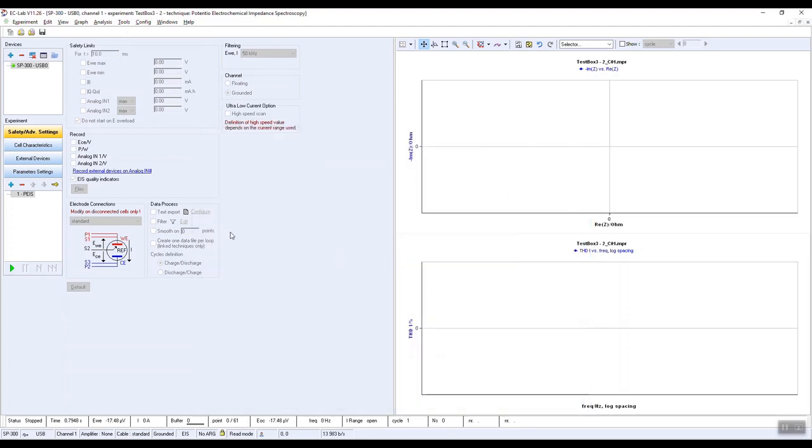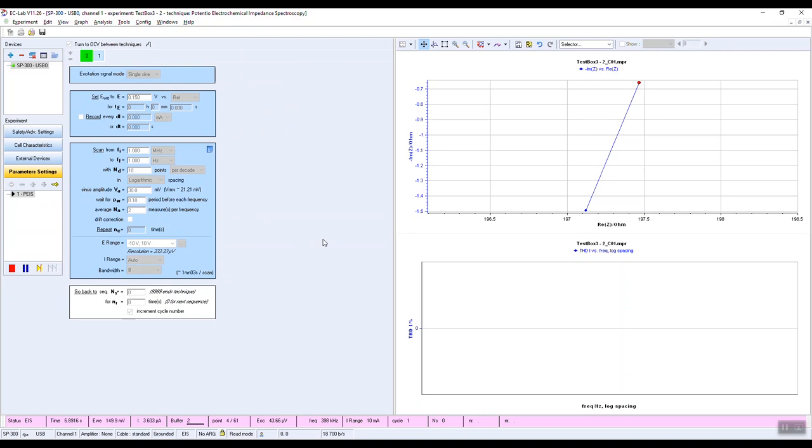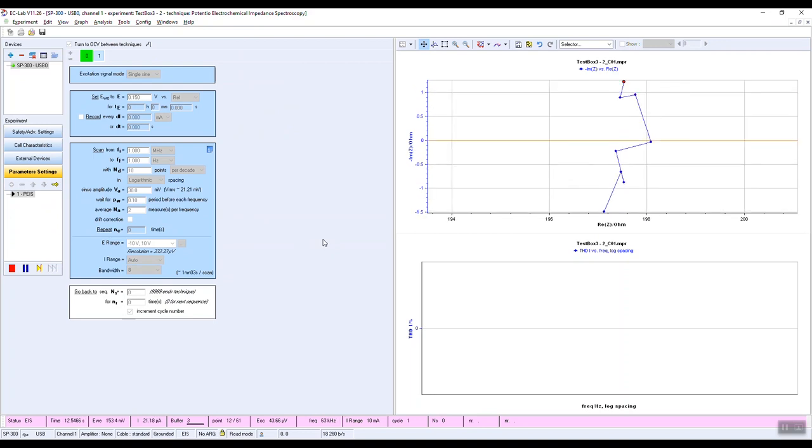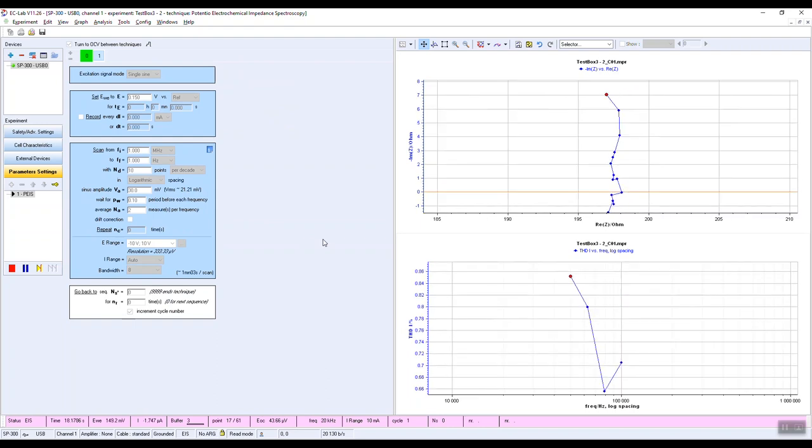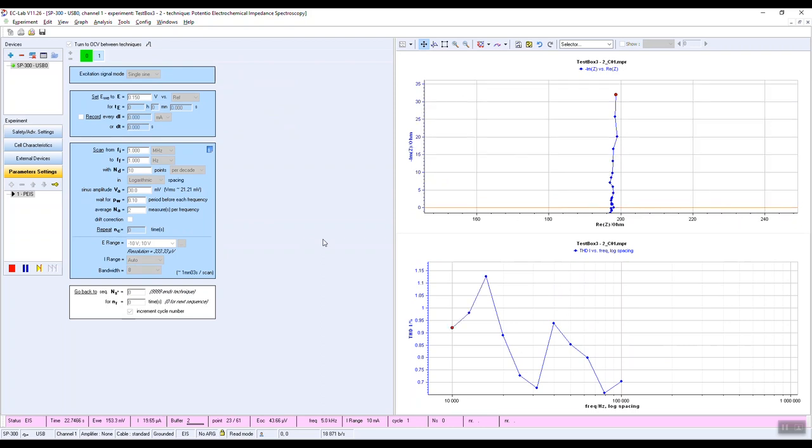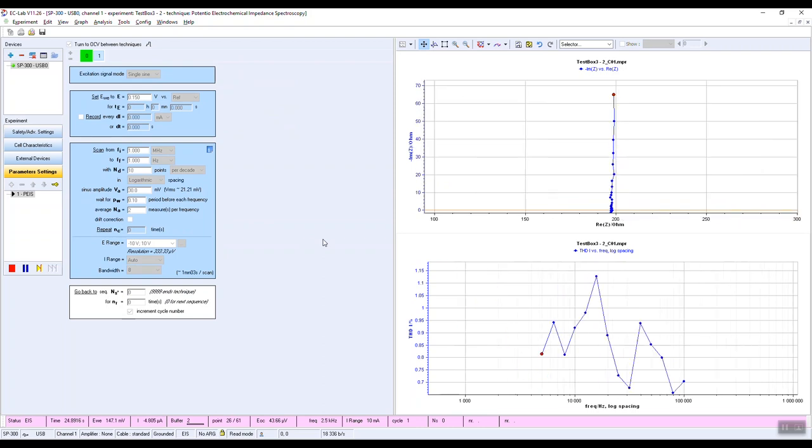Two graphs are shown on the right side of the screen. The typical Nyquist plot in the top and the THD plot in the bottom. The high frequency impedance values of the 3 millivolts scan are coming first. THD is available for frequencies below 100 kilohertz.